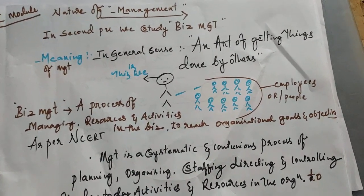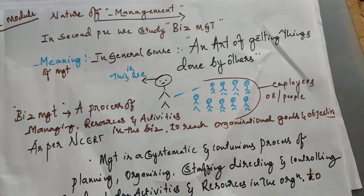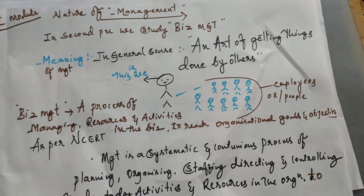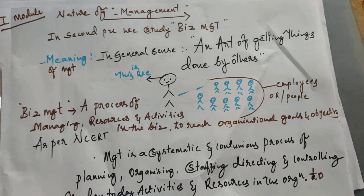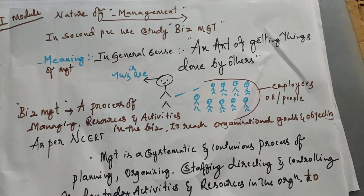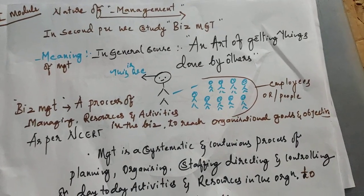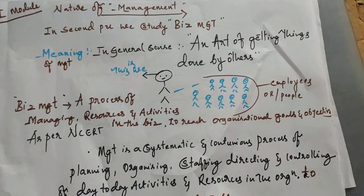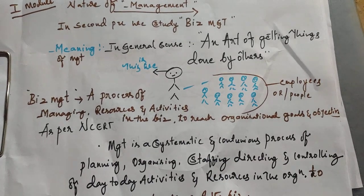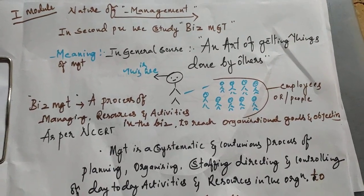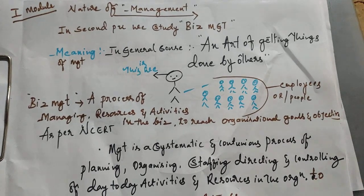Management is a process of managing resources and activities in the business to reach organizational goals and objectives. Activities means the day-to-day functions and executions in the business — production activity, finance activity, marketing activity, HR activities. Reaching organizational goals means expansion of the business, diversification, or achieving 200 crore, 500 crore, or 1000 crore profit. Management is very essential to achieve these goals and objectives.